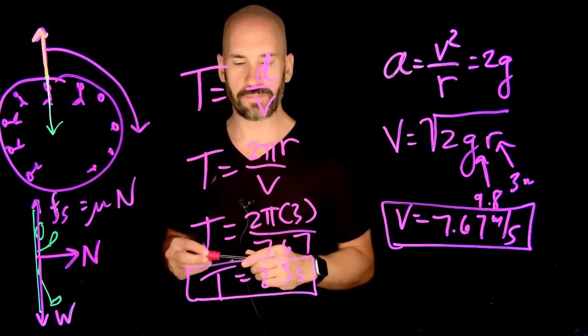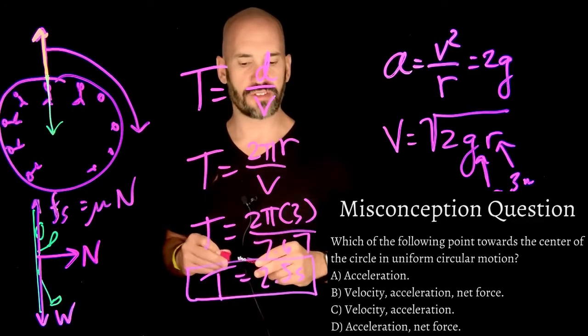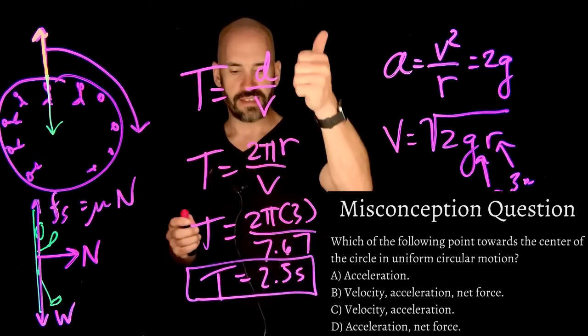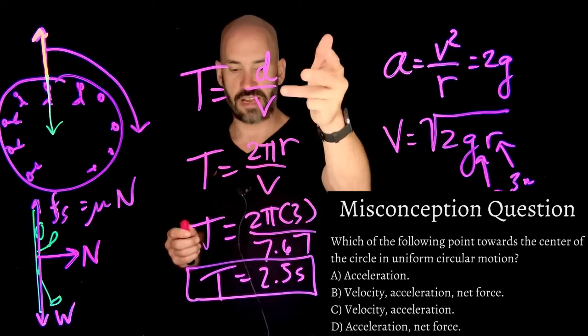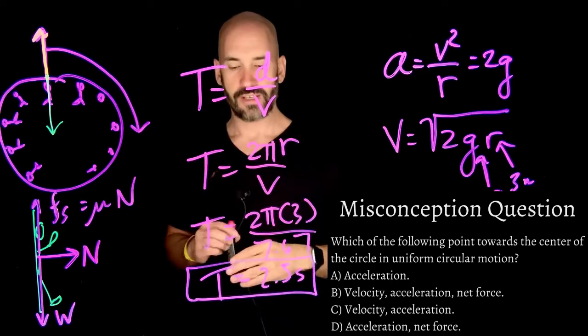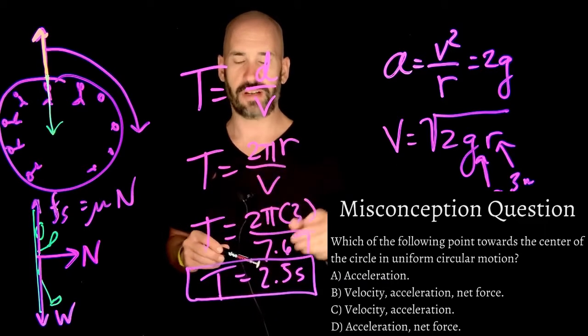If you guys could advance to the next slide, we have a misconception question. And it says, which of the following point towards the center of a circle in uniform circular motion? The acceleration, A. B, the velocity, acceleration, and net force. C, the velocity and acceleration. Or D, the acceleration and net force.